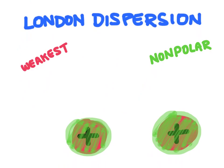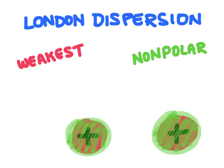London dispersion forces are the weakest of the intermolecular forces. They occur between all molecules, but they're going to be most noticeable in non-polar molecules because there are no other attractive forces at work between non-polar molecules. These London dispersion forces are going to hold molecules together, but it's a very weak force.